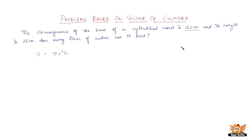Use 2πr to find r, then substitute in the volume formula and find the number of liters the vessel can hold. This is how the problem has to be done. Now let us solve the problem.